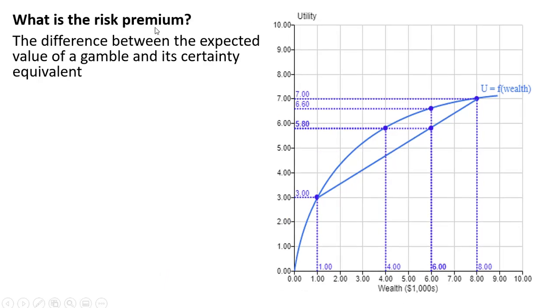Our next question, what is the risk premium? This is going to be the difference between the expected value of a gamble and its certainty equivalent. So we already learned that the expected value is $6, and we're going to see that the certainty equivalent is going to be $4. So the answer here is going to be $2. At a wealth of $4, a guaranteed wealth of $4, the utility is 5.8, and that equals the expected utility of this gamble when the expected value of wealth is $6.